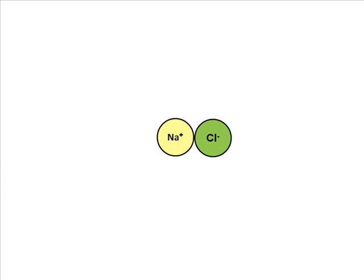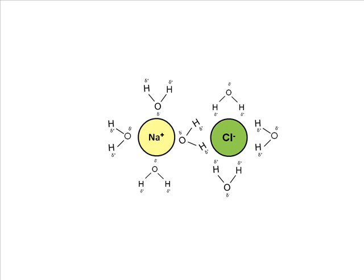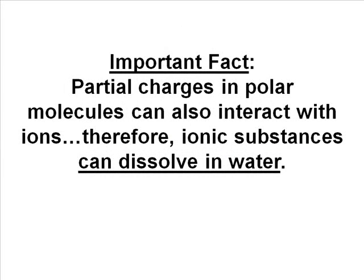Oh, by the way, it's not just about polar substances. Ionic substances have full charges. Well, hang on. The full positive of sodium should be attracted to the weak partial negative on oxygen, and the chloride negative should be attracted to the weak partial positive on the hydrogens in water. Thus, get a bunch of ions together with a bunch of water molecules, and they will interact with the hydrogen bonds. I'm sorry, with the partial charges. Partial charges in polar molecules can also interact with ions, therefore ionic substances can dissolve in water.